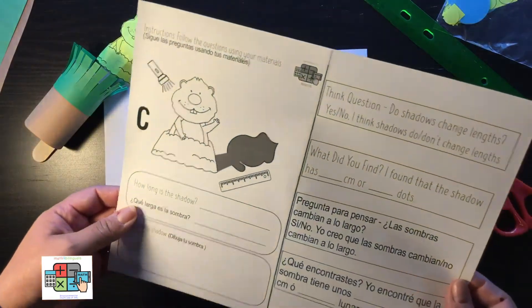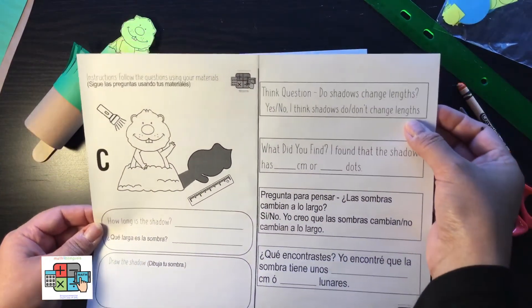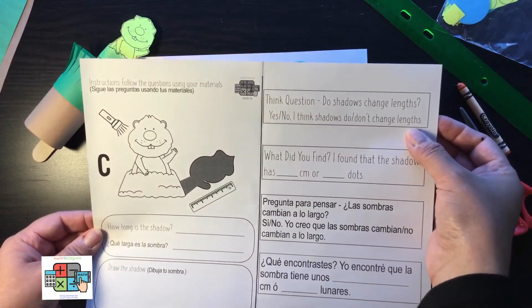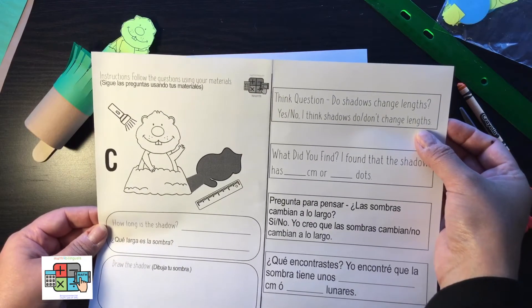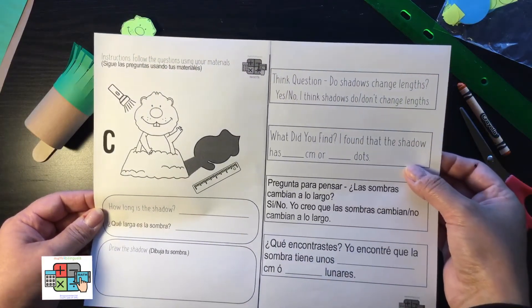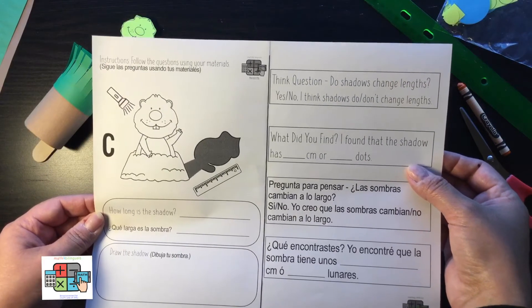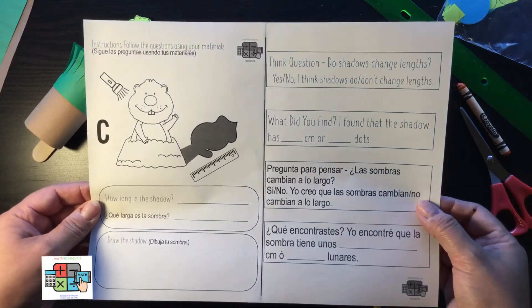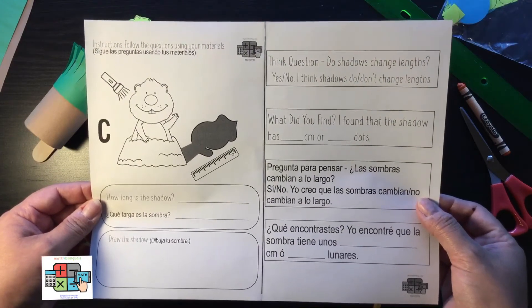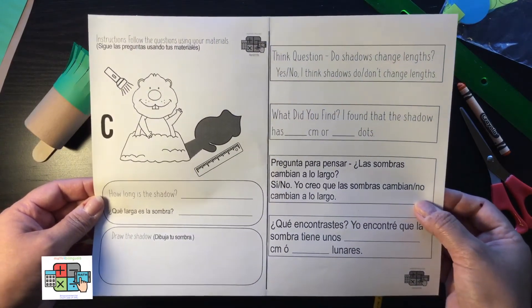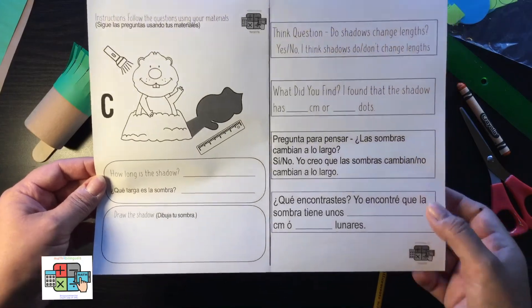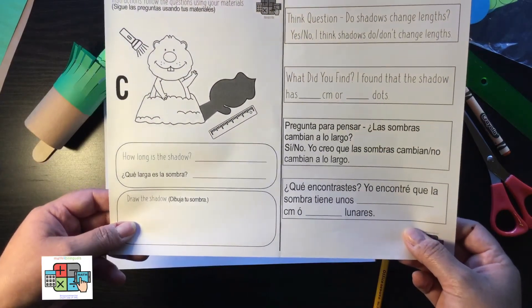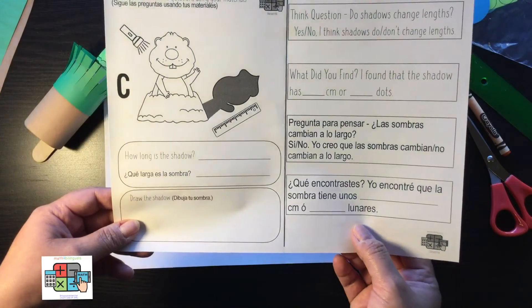The important part is once you draw that on your worksheet, you're going to begin by investigating. Do shadows change length? Yes or no? I think shadows do or don't change length. What did you find? I found that the shadow has a certain amount of centimeters or dots. Pregunta para pensar: las sombras cambian a lo largo, sí o no? Yo creo que las sombras cambian o no cambian. Qué encontraste? Yo encontré que la sombra tiene unos centímetros o unos lunares.